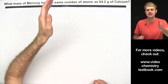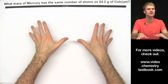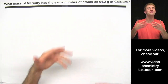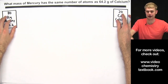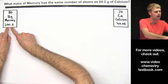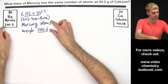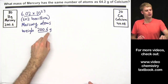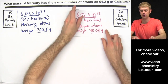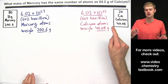The second question: What mass of mercury has the same number of atoms as 64.2 grams of calcium? The wording here can be confusing. We can look up mercury and calcium on the periodic table — the molar mass tells us how much a mole of each type of atom weighs. One mole of mercury atoms (602 hexillion atoms) weighs 200.6 grams, and one mole of calcium atoms (602 hexillion atoms) weighs 40.08 grams.